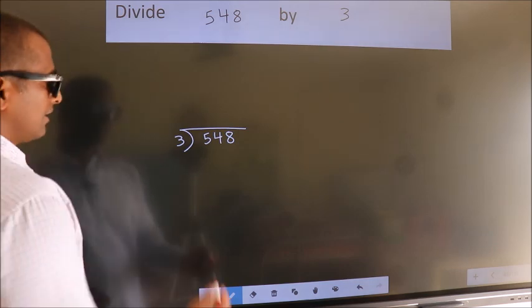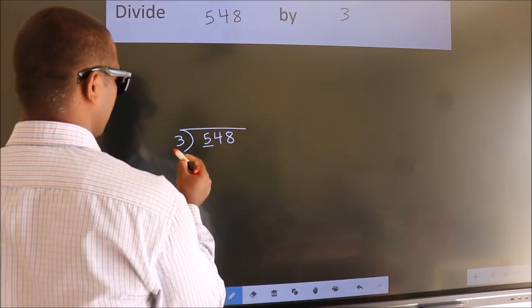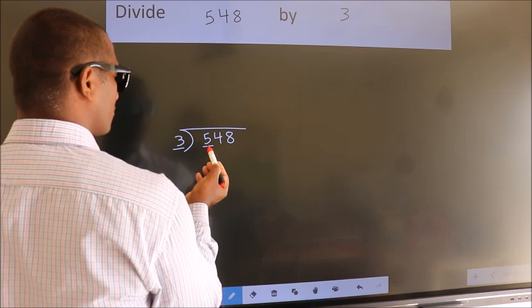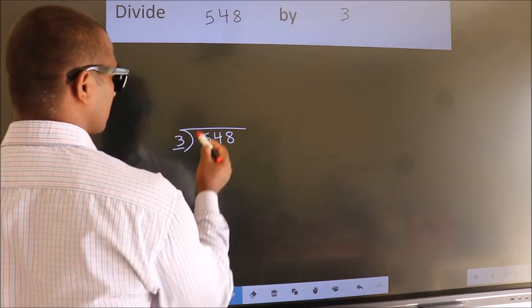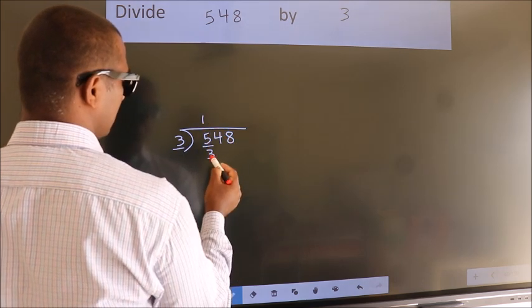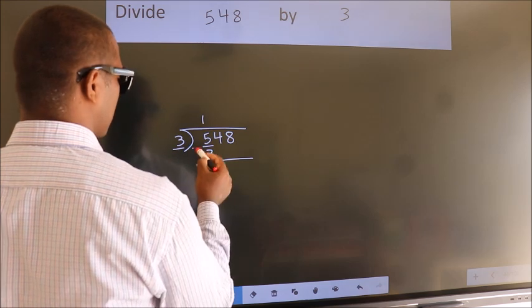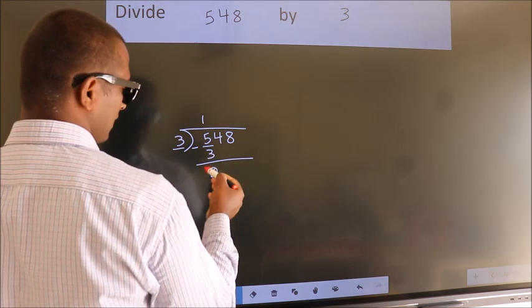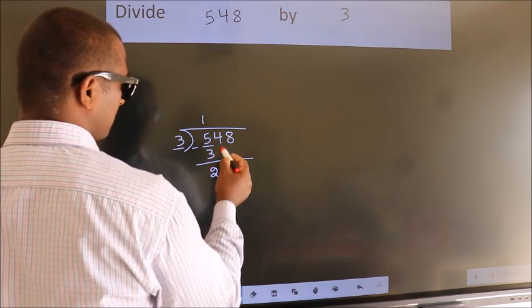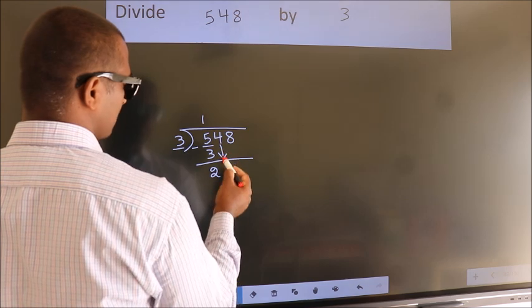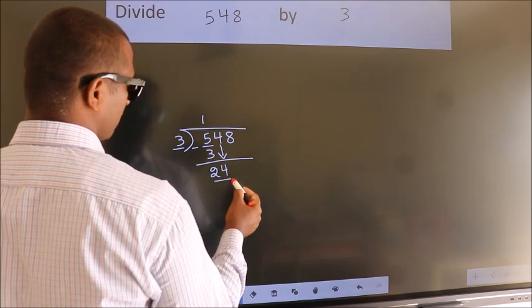Next, here we have 5, here 3. A number close to 5 in the 3 table is 3 once 3. Now we subtract. We get 2. After this, bring down the beside number. 4 down, so 24.